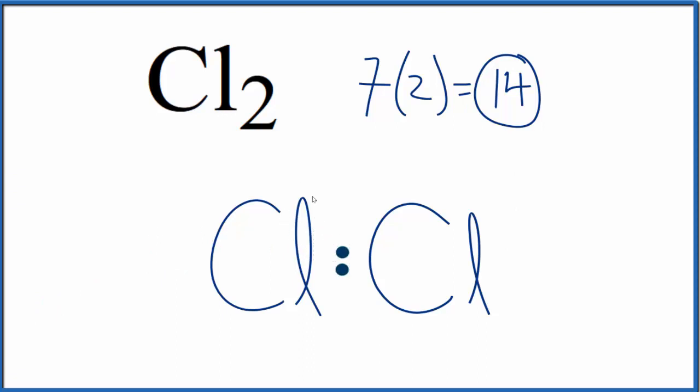Then we'll complete the octets on each of these chlorine atoms until we use 14 valence electrons. So at this point, we've used 14 valence electrons.